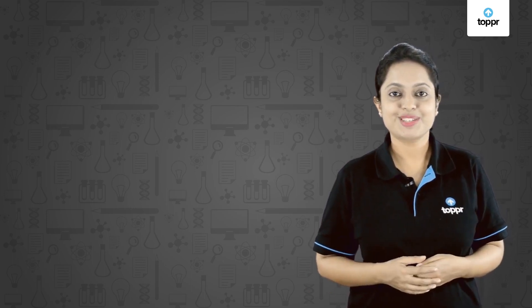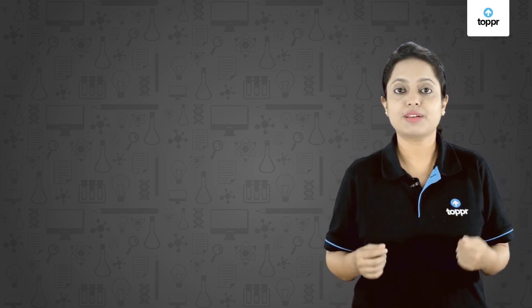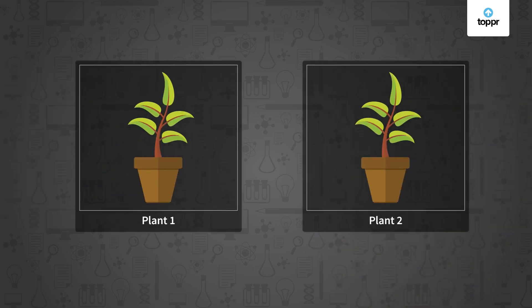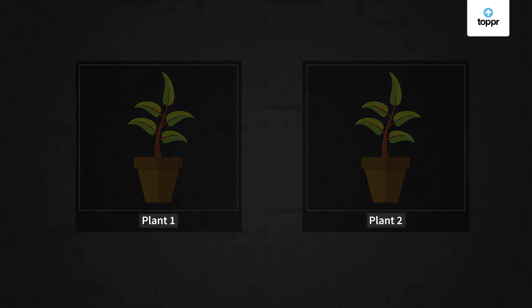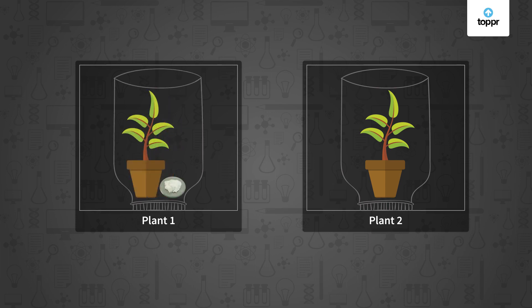Let's do one more experiment to see if you got the gist of photosynthesis. In this experiment, we'll also use iodine solution to test the presence of starch. We'll take two potted plants and label them as plant one and plant two. Keep these plants in the dark for three days — this will remove all the starch present in the leaves. Then invert glass jars over these plants and keep potassium hydroxide in the jar containing plant one, as potassium hydroxide absorbs carbon dioxide. Now seal both jars airtight and keep them in sunlight for three hours.